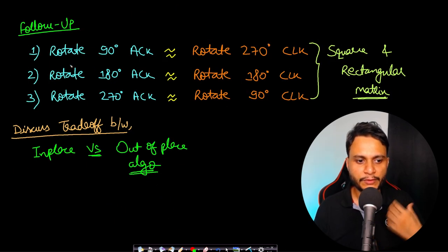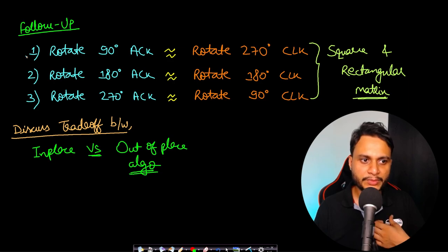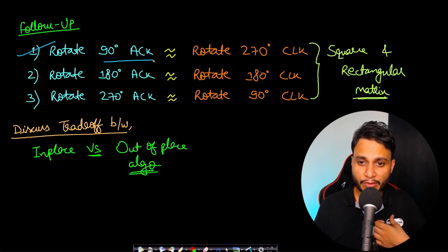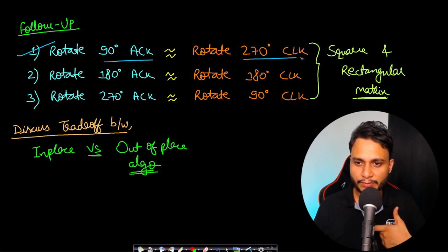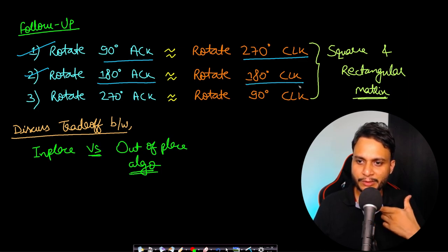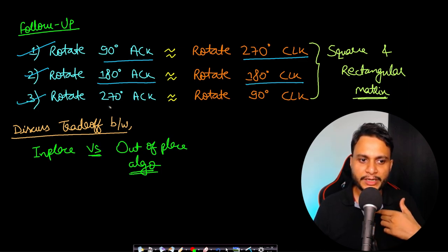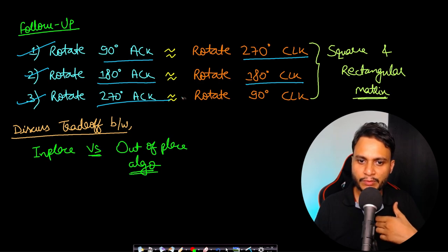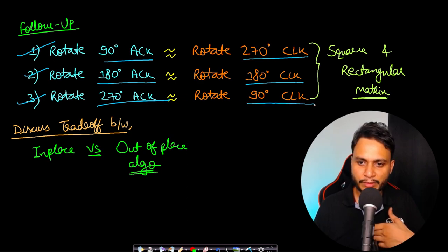Now let's look at the follow-up problems. These include: rotation of 90 degrees anti-clockwise, which is the same as 270 degrees clockwise; rotating a matrix by 180 degrees anti-clockwise, which is the same as 180 degrees clockwise; and rotating the matrix by 270 degrees anti-clockwise, which is the same as 90 degrees clockwise rotation.